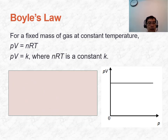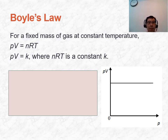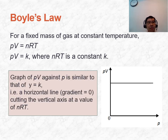Taking another look at Boyle's Law: since PV = K and K is a constant because nRT gives a constant value, if we plot PV against V or PV against P, we get a horizontal line where nRT gives a fixed value and the gradient is 0.